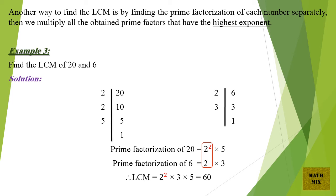Example 3: Find the LCM of 20 and 6. Solution: 20 ÷ 2 = 10, 10 ÷ 2 = 5, 5 ÷ 5 = 1. And 6 ÷ 2 = 3, 3 ÷ 3 = 1. Prime factorization of 20 = 2² × 5. Prime factorization of 6 = 2 × 3. Therefore, LCM = 2² × 3 × 5 = 60.